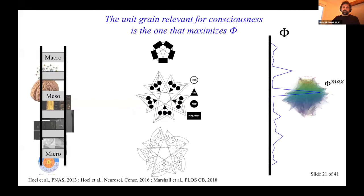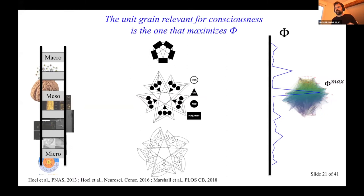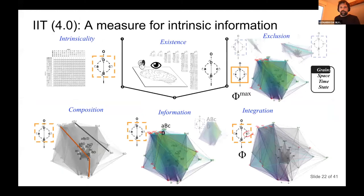One thing often ignored is that you have to do this at every possible temporal and spatial scale. Your units have to be macroed starting from atomic particles up to the whole brain — atoms, molecules, cells, etc. Every time you create a TPM considering the macro units with their states, you compute the probability of observing states and get a phi at some scale. At the scale where phi is maximum, that's where consciousness is. The macro-level giving the highest phi is the conscious one.